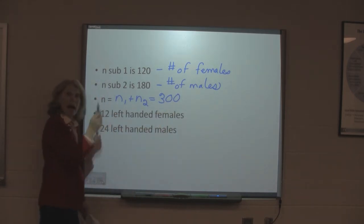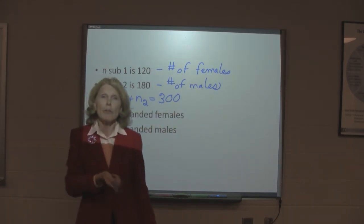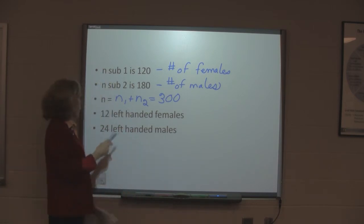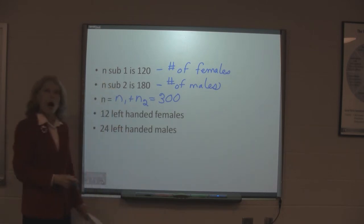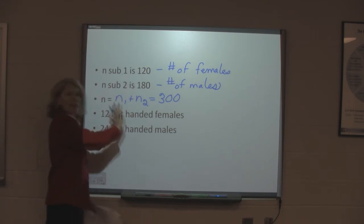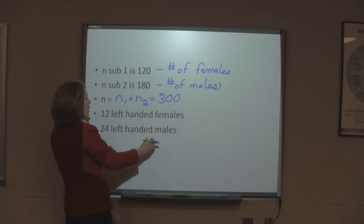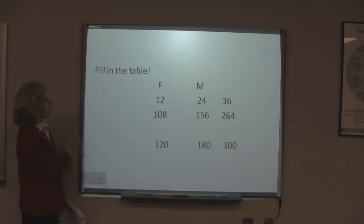And let's say that out of our sample of 120 females, we find that 12 females are left handed. Out of our sample of 180 males, we find that 24 are left handed. So, with that information on this slide, let's go ahead and fill in the table, which is on the next slide.